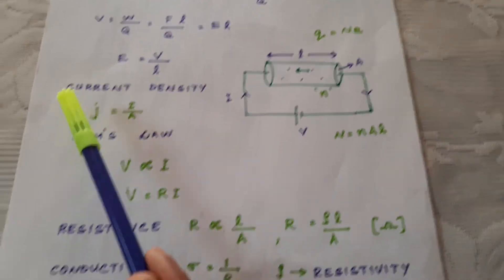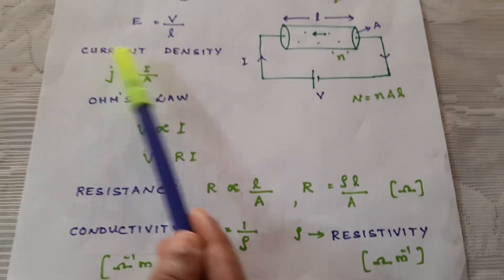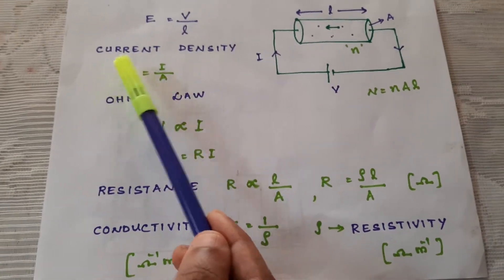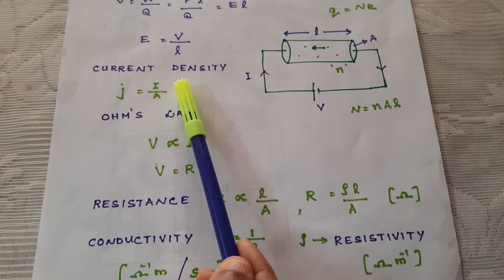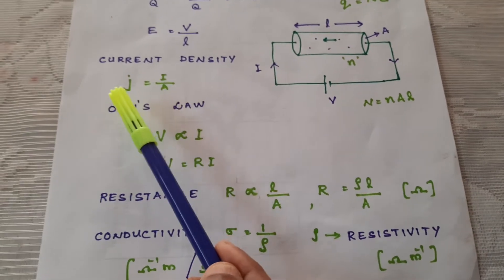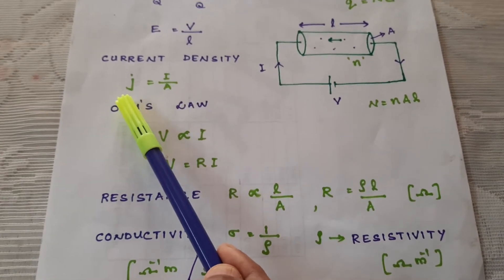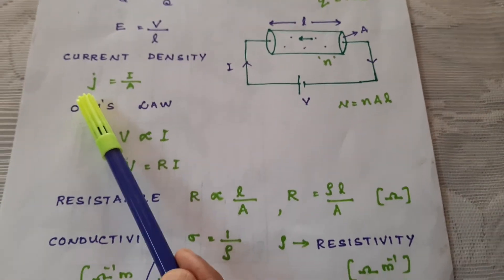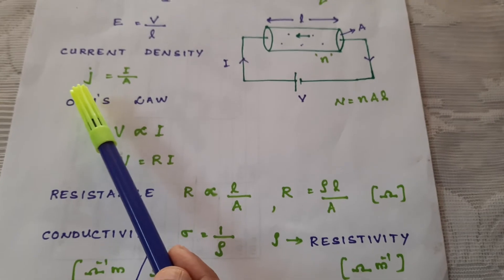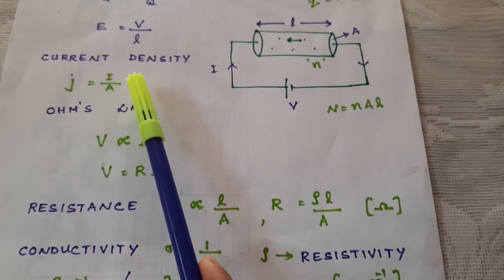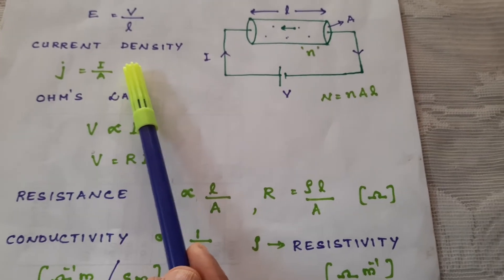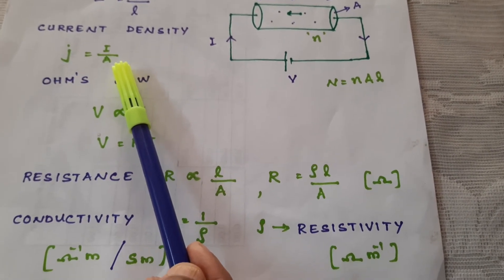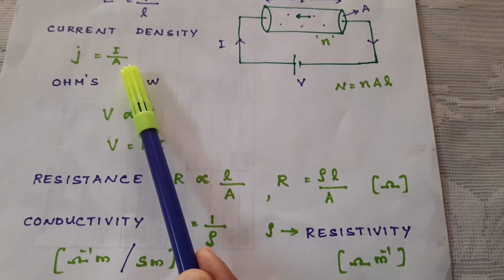Another term related to current electricity is current density. It is denoted by J. It is a vector quantity, and it is defined as the current per unit cross-sectional area.